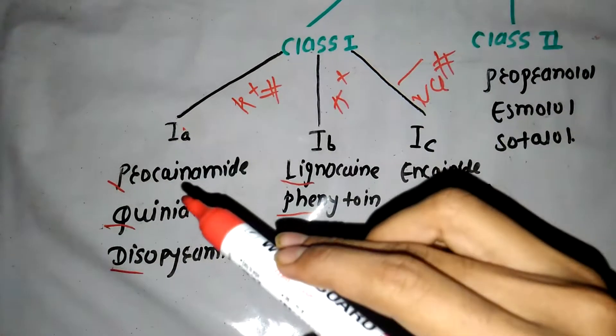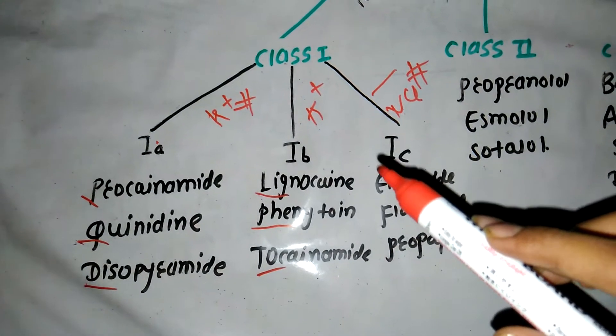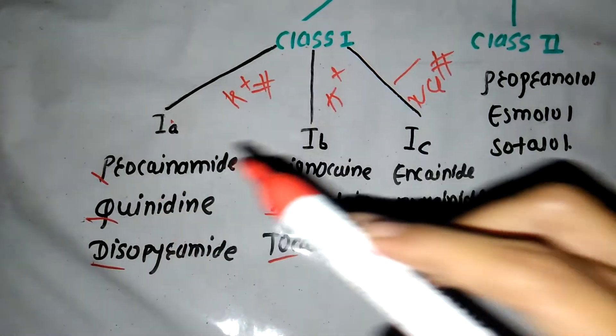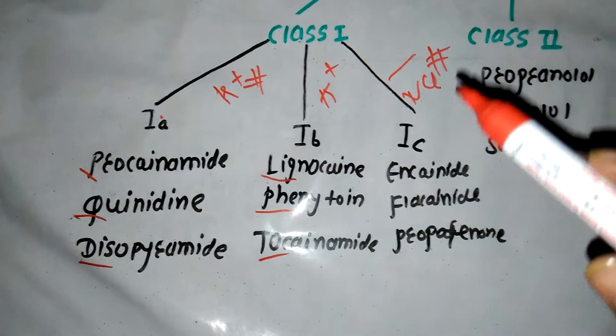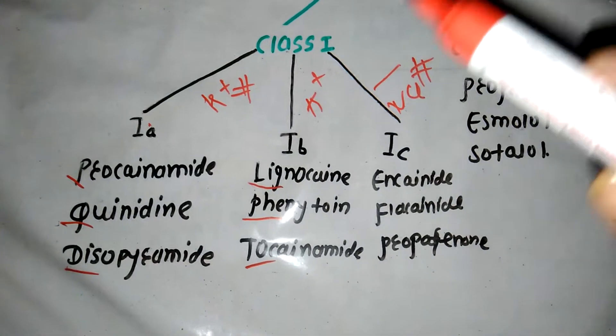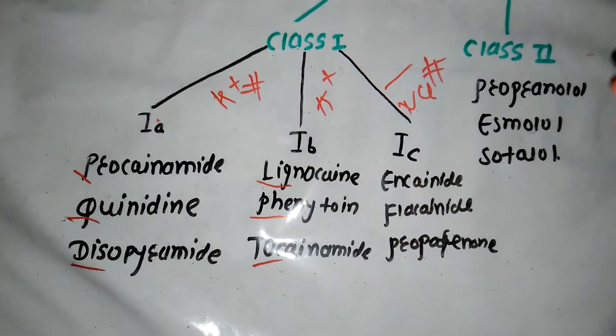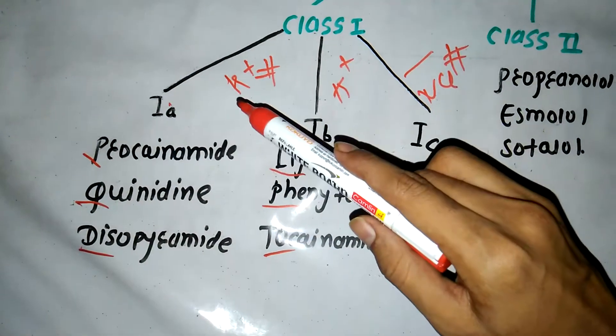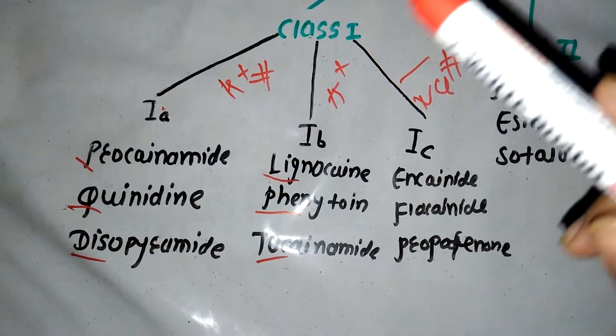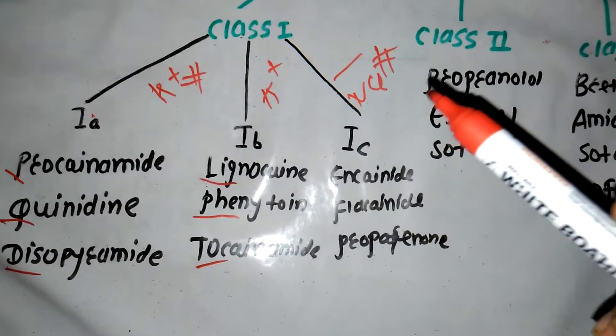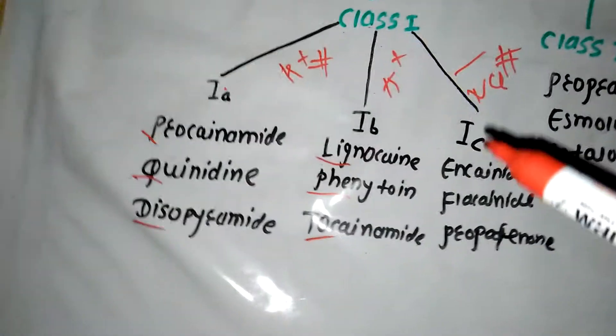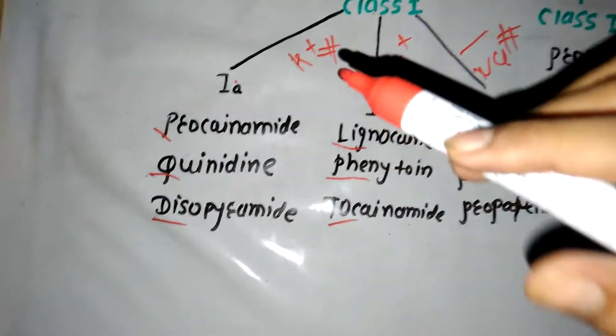Class 1 is divided into Class 1A, Class 1B, and Class 1C. Class 1A is potassium channel blocker and sodium channel blocker. Class 1B has potassium channel opening and sodium channel blocker. Class 1C has sodium channel blocker. I will make it a better way to remember this.